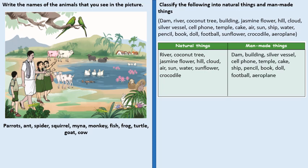Man-made things are those which are made by man. Dam, building, silver vessel, cell phone, temple, cake, ship, pencil, book, doll, football, aeroplane.